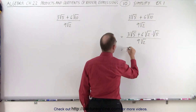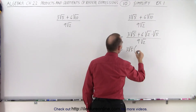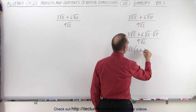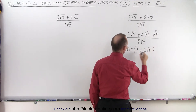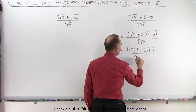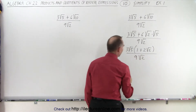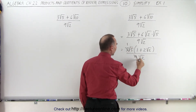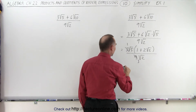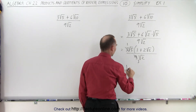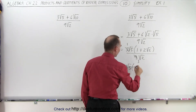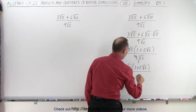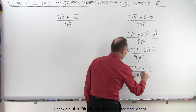So this is equal to 3 times the square root of 5, and then we multiply what we have left: 1 plus 2 times the square root of 2, all divided by 9 times the square root of 2. Then you see a 3 and a 9 that can simplify, so finally we have the square root of 5 times (1 plus 2 times the square root of 2) all divided by 3 times the square root of 2.